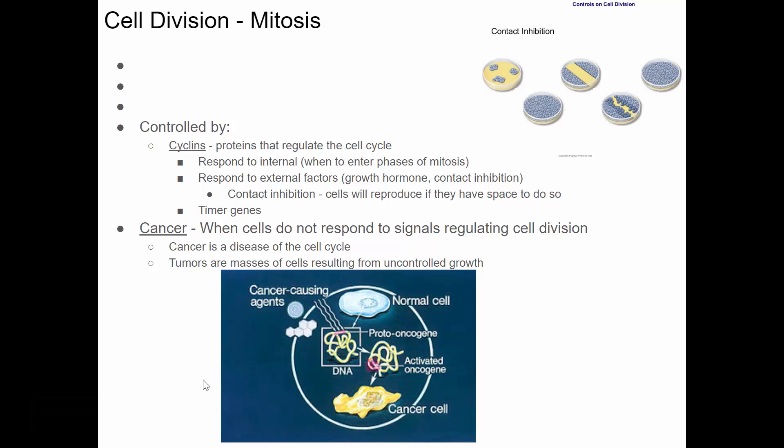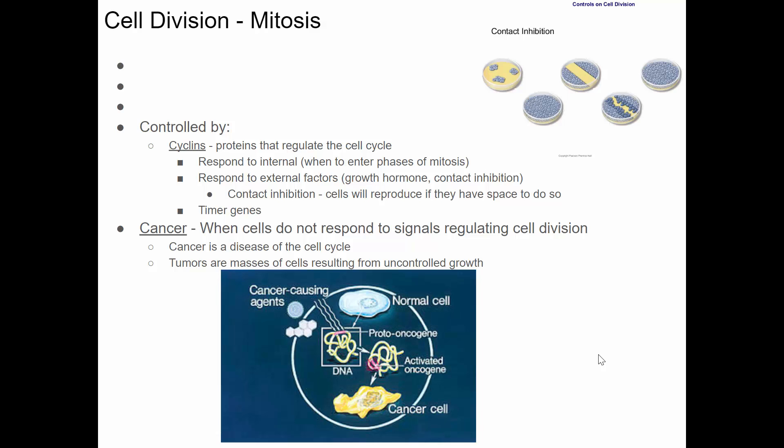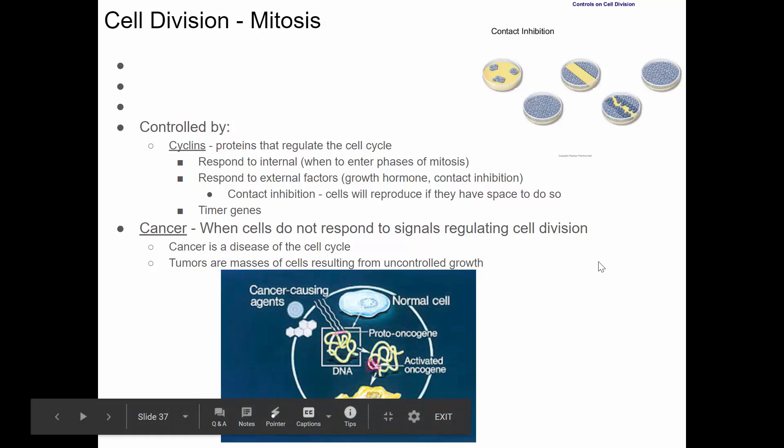We're going to start here in the next couple of classes and finish up our discussion of cell division. This type of cell division is called mitosis. In organisms, cells need to reproduce for several reasons. To heal an injury to a multicellular organism, you need to replace damaged cells. You need new cells to grow. In single-cell organisms, cell reproduction results in the organism reproducing.